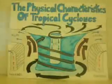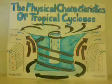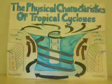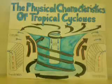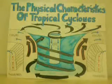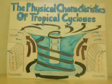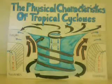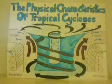The Physical Characteristics of Tropical Cyclones. Warm water generates the formation of tropical cyclones. Ocean temperatures must be at least 26.5 degrees Celsius.